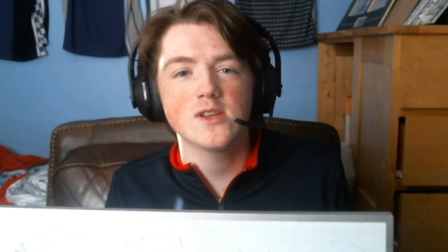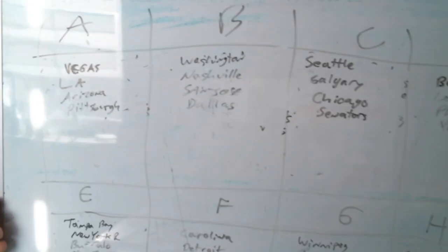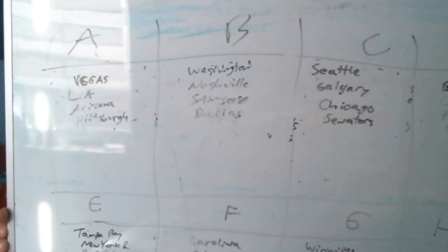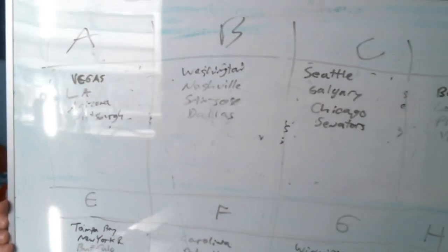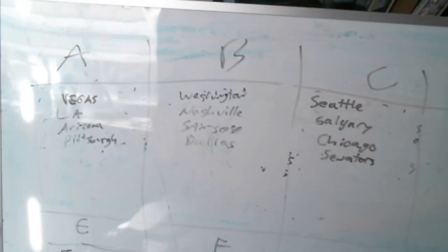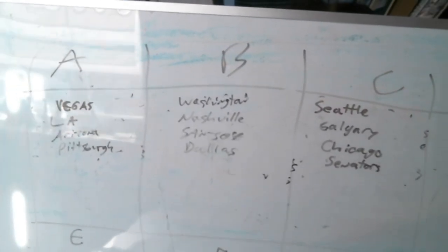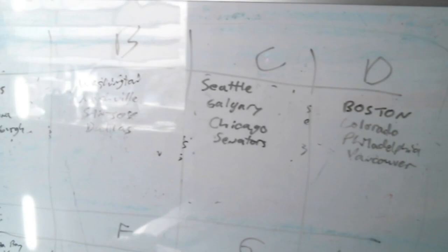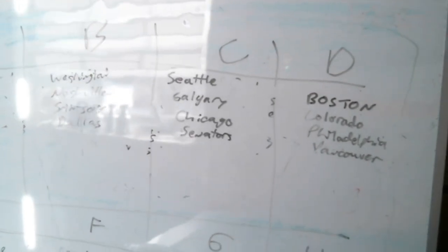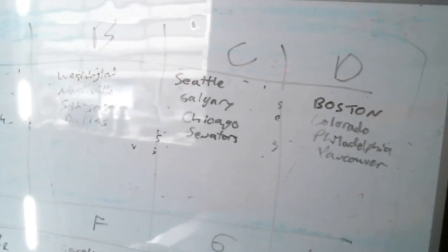You guys just saw all the wheel spins. Now I'm going to show you the groups. In Group A, we got Vegas, LA, Arizona, Pittsburgh. Group B: Washington, Nashville, San Jose, Dallas. Group C: Seattle, Calgary, Chicago, Ottawa.